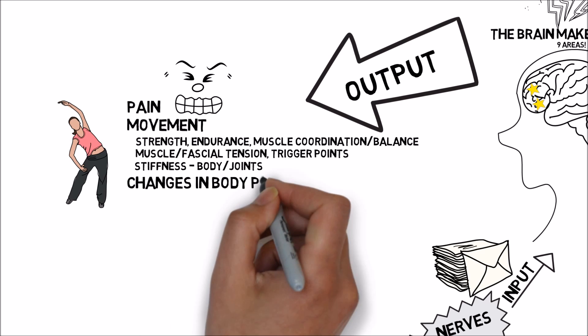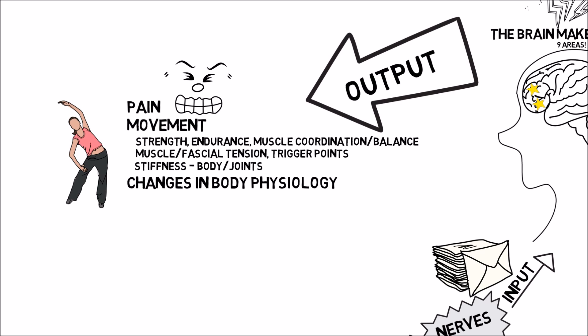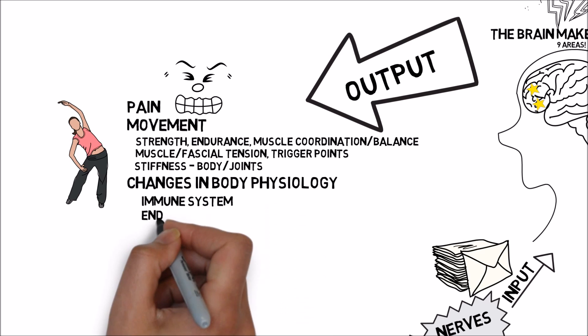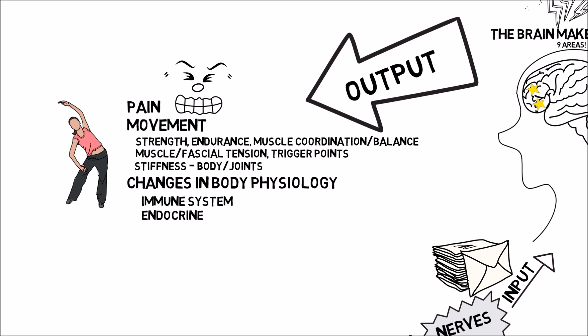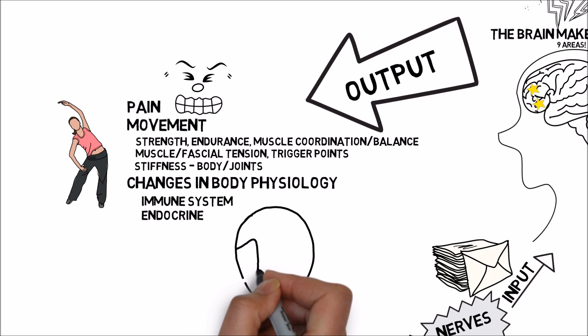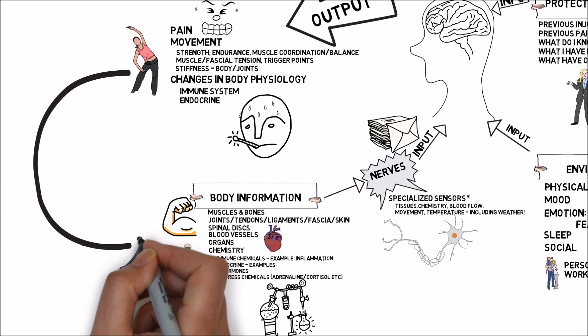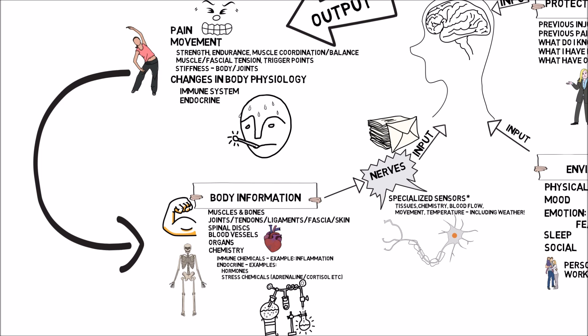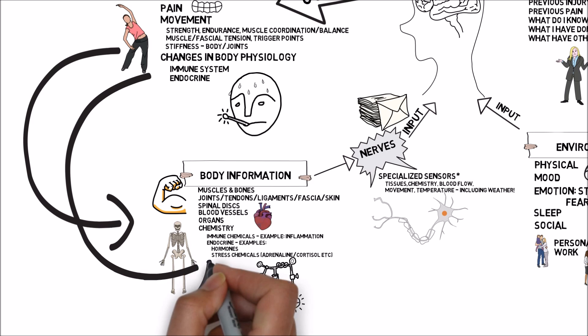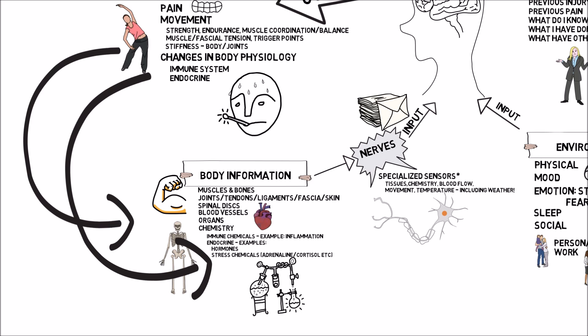One of the coolest outputs currently being researched is altered physiology — the brain's outputs include changes in our immune system and our endocrine system. The brain can decide how much inflammation to send to a region or the whole body. We know that in diseases like rheumatoid arthritis, adding electrical impulses to a specialized nerve called the vagus nerve can dramatically change how much inflammation the whole body experiences.